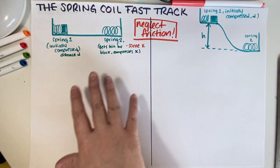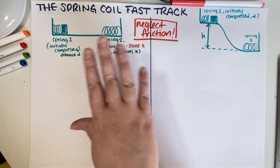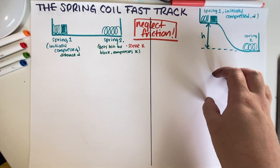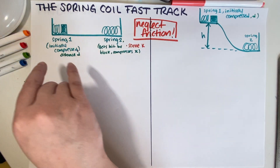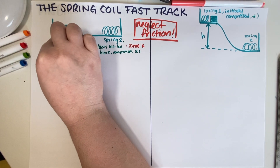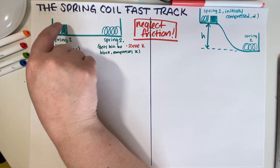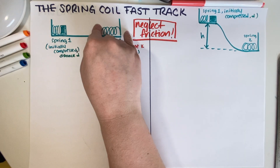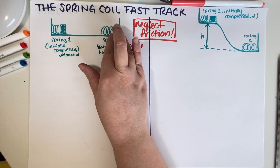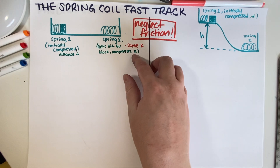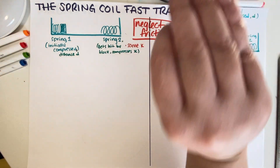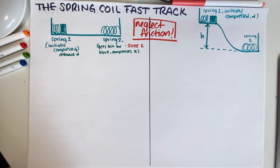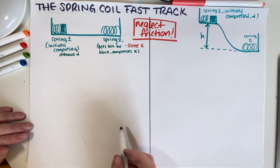As you can see, I have the first scenario here. We're going to work on this left side of the page first and then do the second one. We have to do an energy interaction diagram and figure out whether — basically, the block is released from spring one, which decompresses, and then hits spring two. Spring two gets compressed a distance that I'm going to call x.